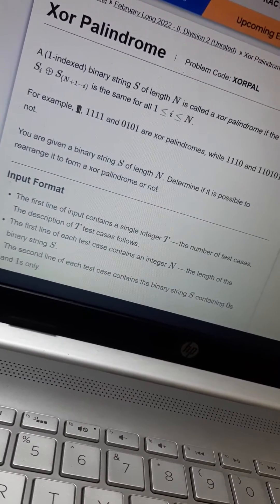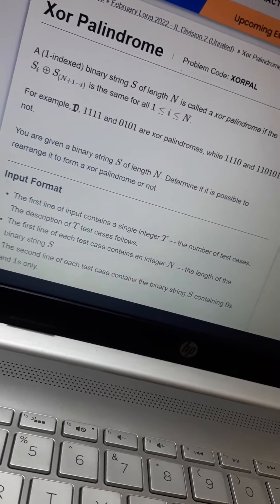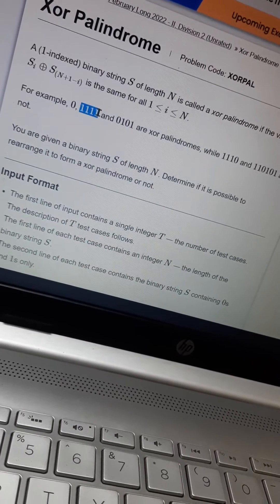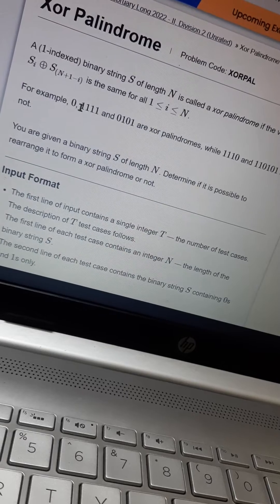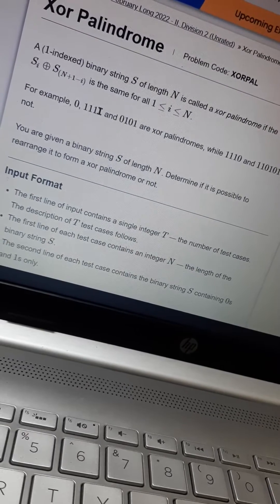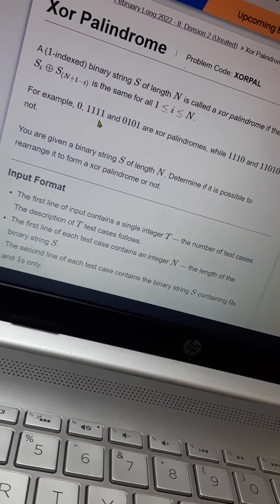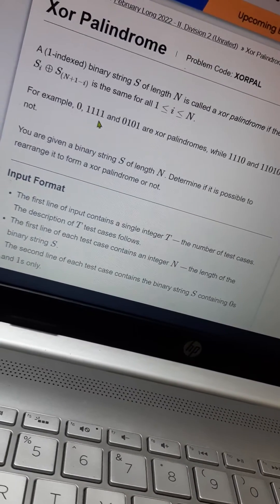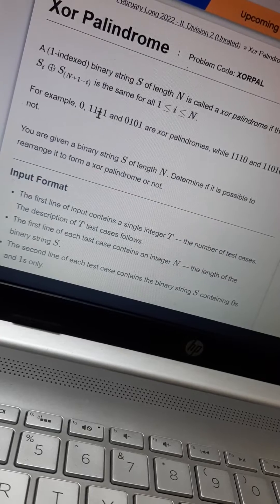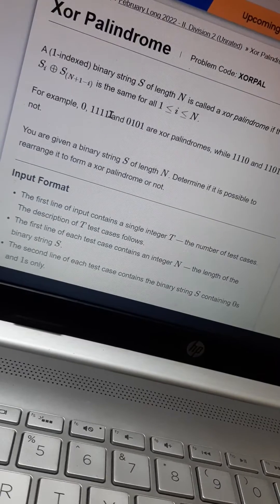For example, 00 itself is an XOR palindrome. Also 1111 - take 1 and 1, the XOR is 0, and again 1 and 1, for every case it will be 0.